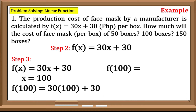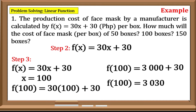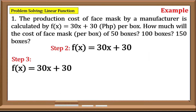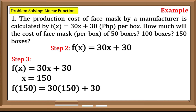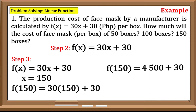Simplify: 30 times 100 equals 3000, plus 30, equals 3030. Now let us have 150 for the value of x. f(150) = 30 times 150, plus 30. Simplify: 30 times 150 equals 4500, plus 30, that is equal to 4530.